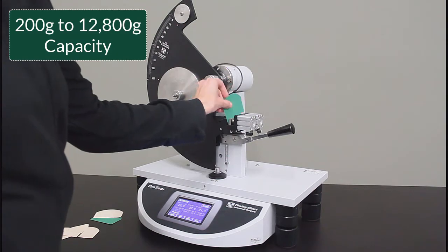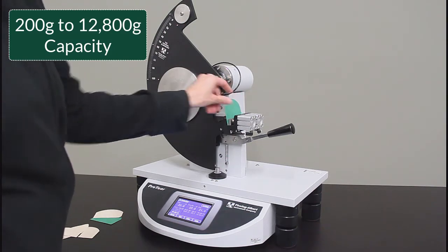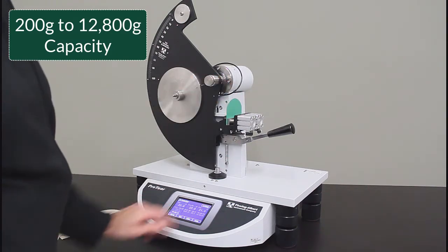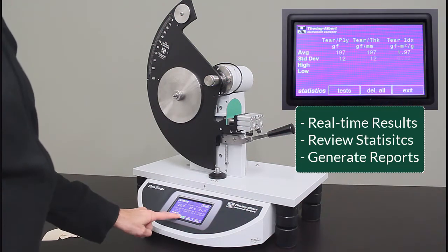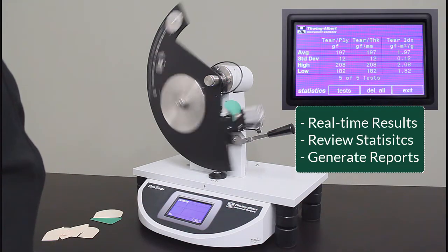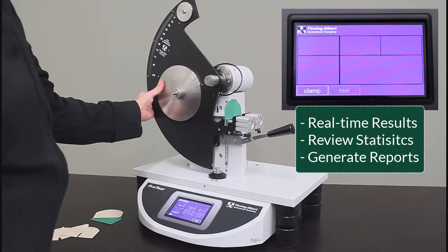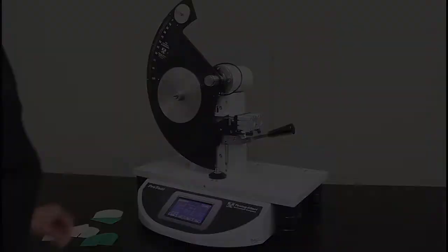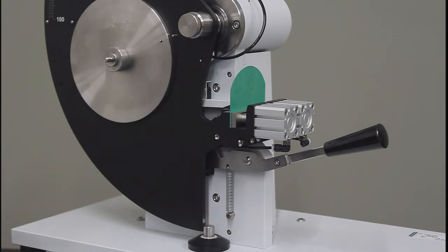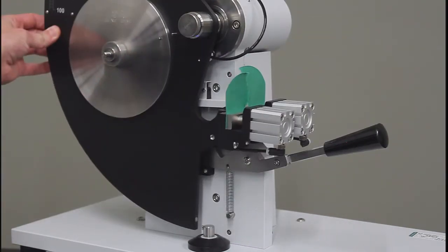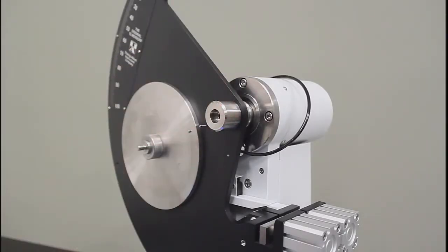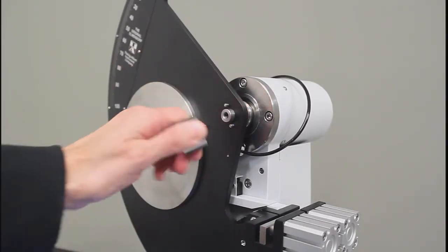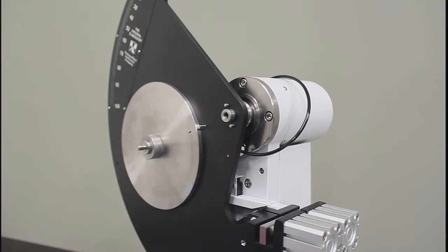The ProTear electronic model offers a capacity from 200 to 12,800 grams and features a touchscreen menu for simple testing and quick results. Simply place your sample, clamp, cut to initiate tear, and run the test. Changing capacities is simple with tool-less, easy-mount pendulums and augmenting weights.